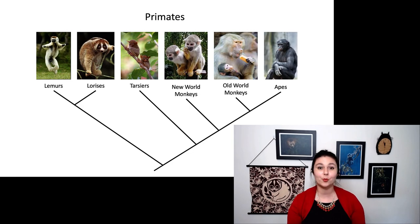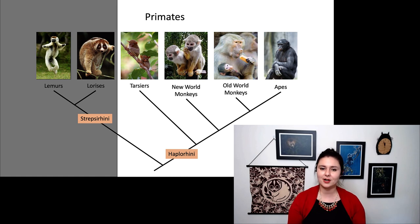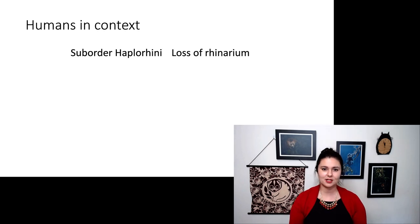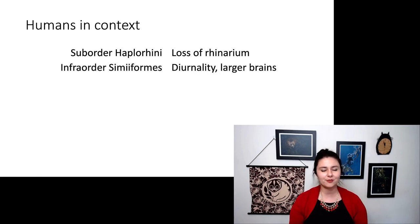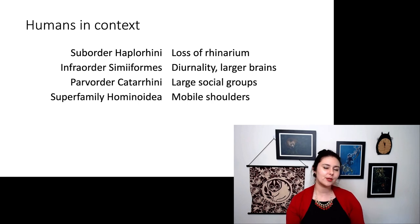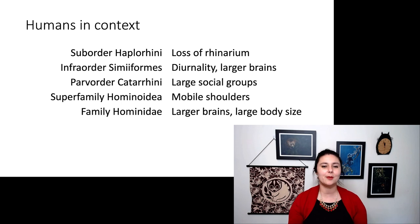We can look at our, within primates again, it might be helpful to review the different groups of primates. But first we have our strepsirrhines versus haplorhines. Then we have our tarsiers versus our anthropoids. Then our platyrrhines versus our catarrhines. And lastly, within catarrhines, we have cercopithecoids and hominoids. So if you want to put humans in context within primates, in suborder haplorhini, we have lost our rhinarium. In infraorder simiiformes, or also anthropoidea, that is where we have our diurnality and larger brains. Parvorder catarrhini, we see larger social groups. Superfamily hominoidea, that's where we get our nice mobile shoulders. In family hominidae, that's where we have even larger brains and large body size. And tribe hominini is where we see bipedality emerge.